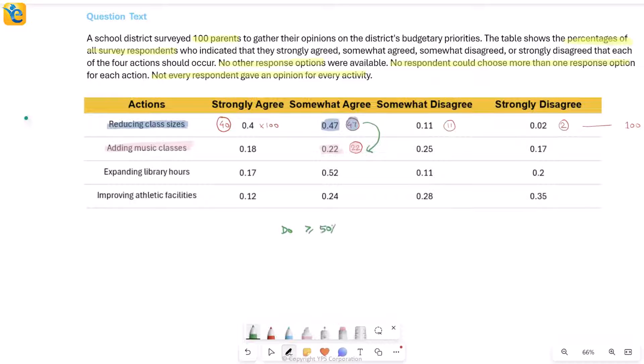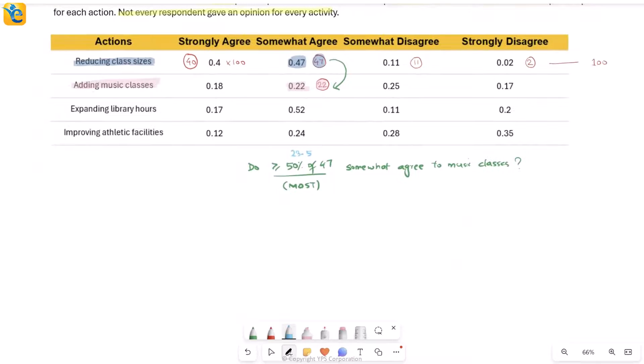What is my question really asking? I will now reword it using the numbers I have. Essentially, it is saying: is most of these 47 people also among the 22? Which means, do more than or equal to 50% of these 47 people somewhat agree to music classes? Because that is what most means. When I find half of 47, that is 23.5. Obviously, I can't have decimal people. So this can be rewritten as: do at least 24 people out of these 47 somewhat agree to music classes also?